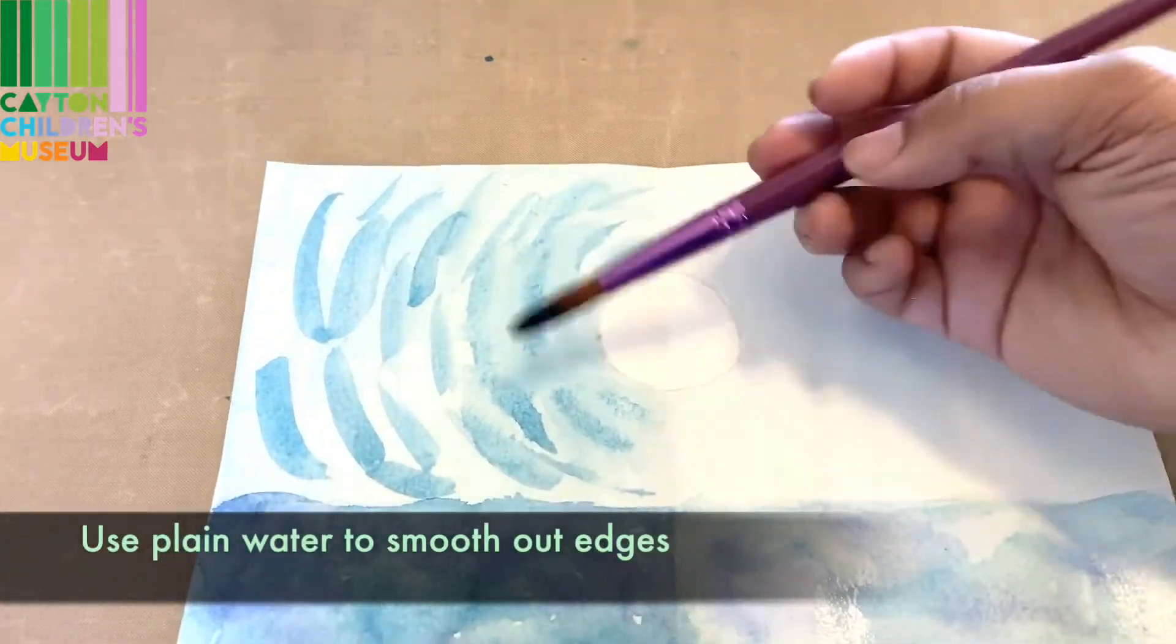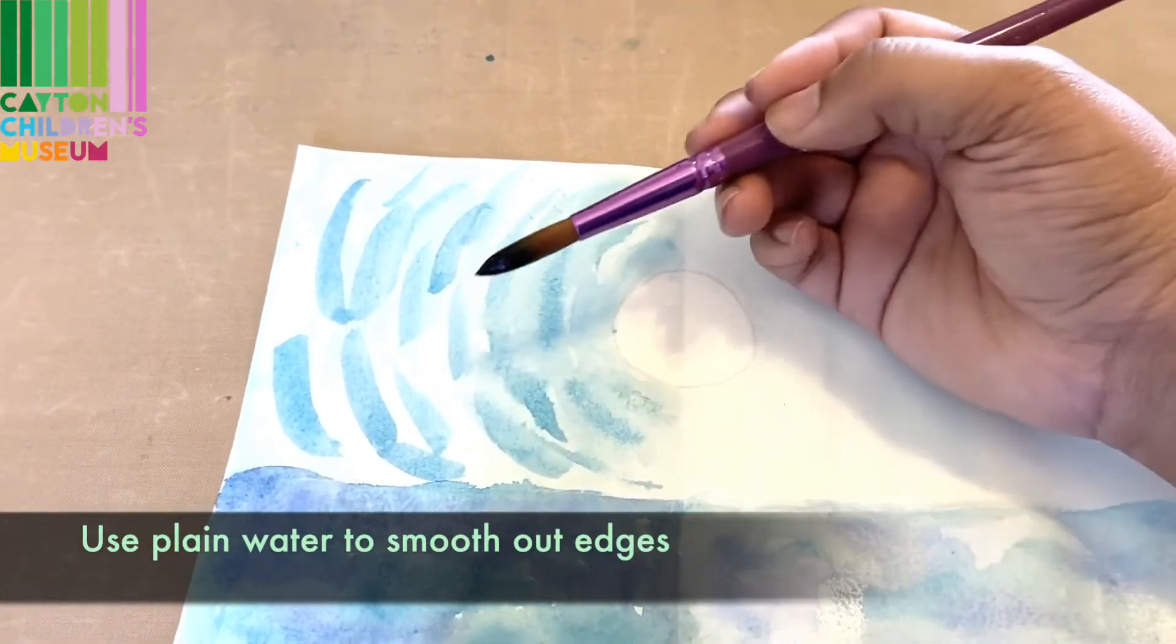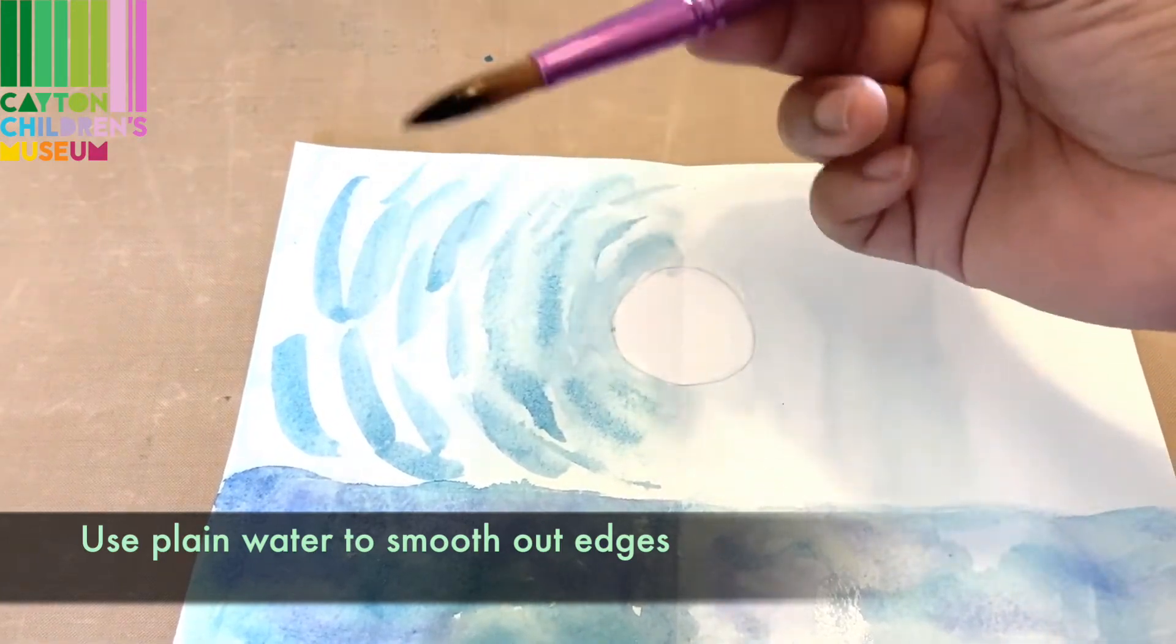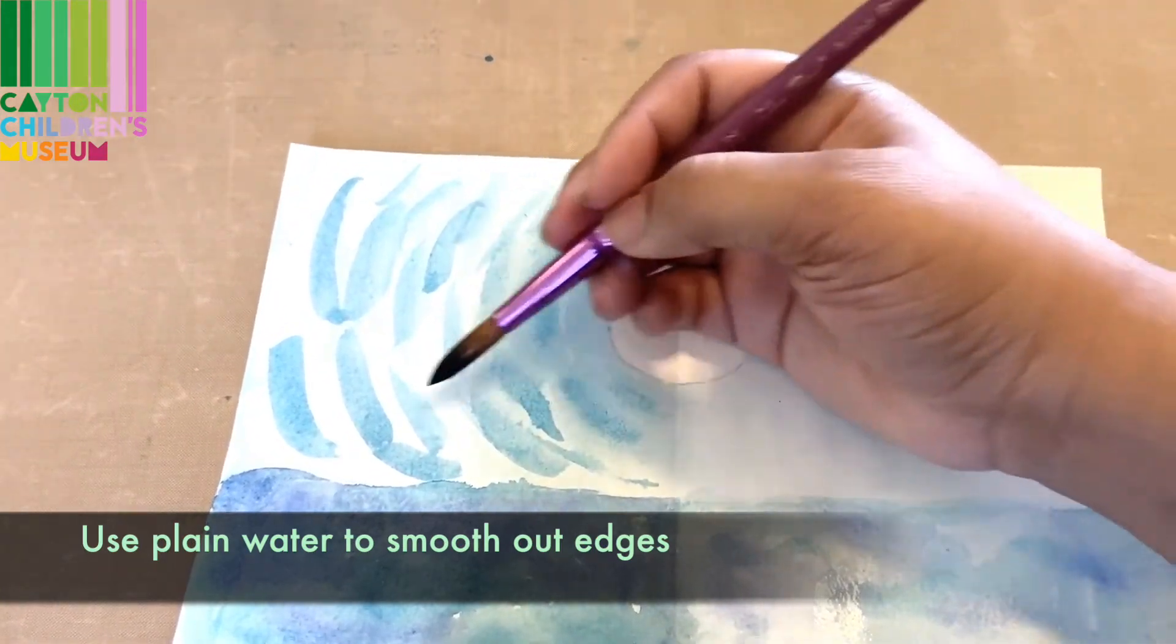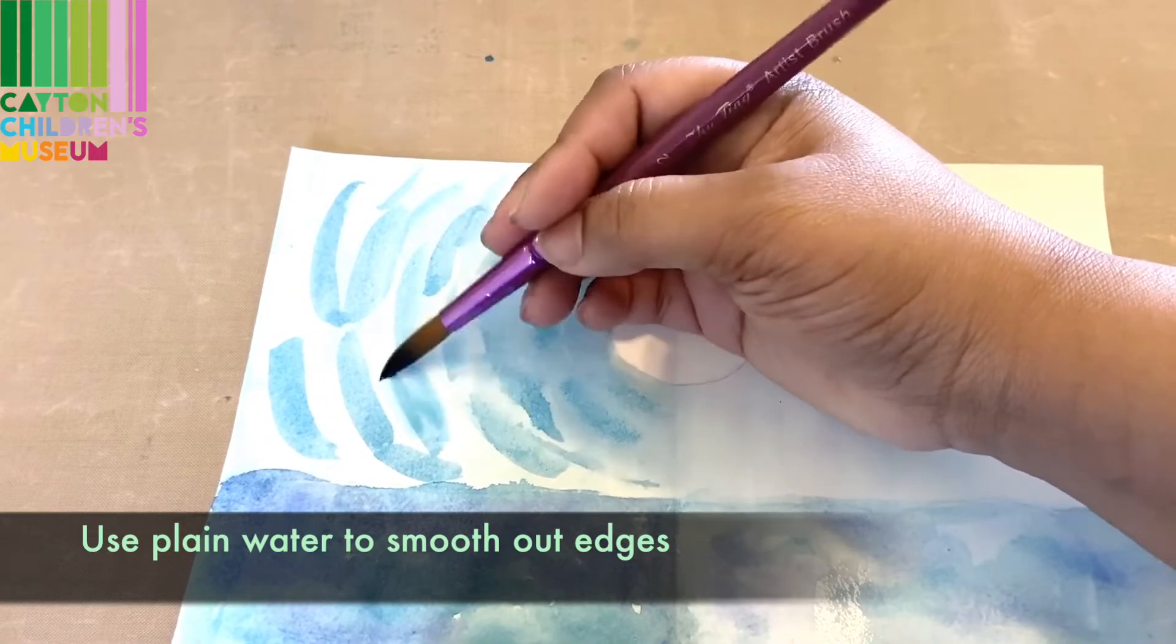What you'll notice I'm doing here is putting color down and taking a brush with just water to blend these sharp lines out.